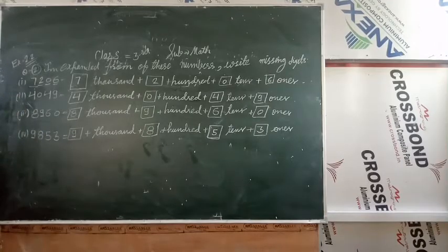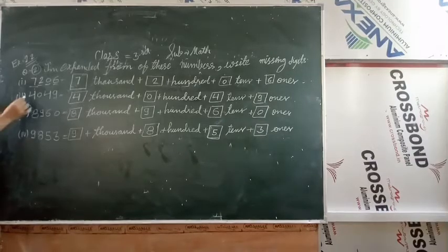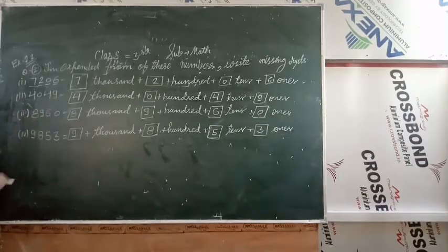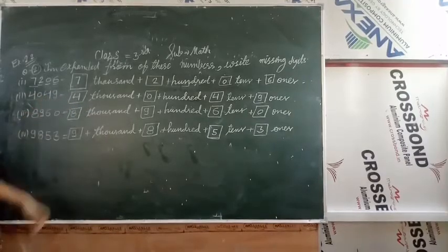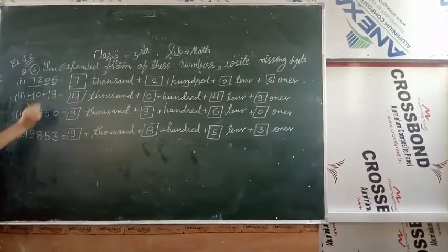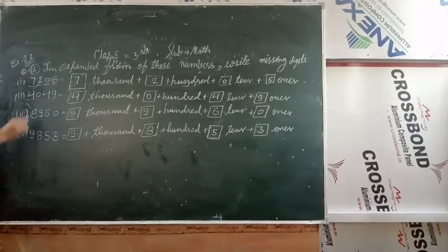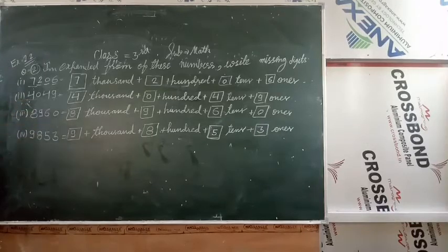Question number 2 is 4049. This is 4 digit number. Ones ki value 9 hai. Tens is 4. Hundreds is 0. Thousands is 4. Theek hai.